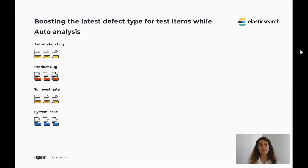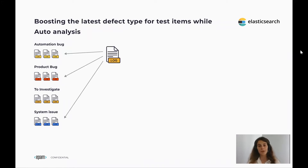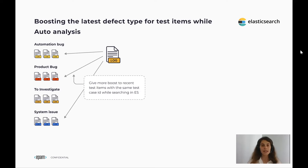It turns out that sometimes test automation engineers change their mind on the real reason for test failure, even though they reported the same log lines for that test item. This can happen due to new circumstances, or the real reason was revealed just after some time. That's why we would like to override the previous results with the new ones. When a new test item appears, we search for similar logs and give more boost to recent test items with the same test item unique ID.